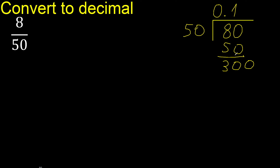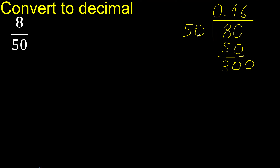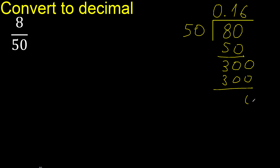The point is here. 300. 50 multiplied by which number? 50 multiplied by 6 is 300. Subtract — the result is 0. Therefore, finish.